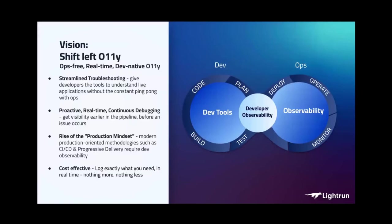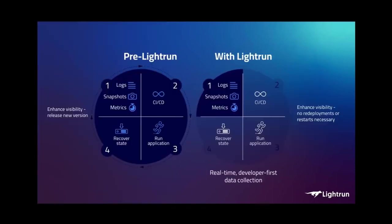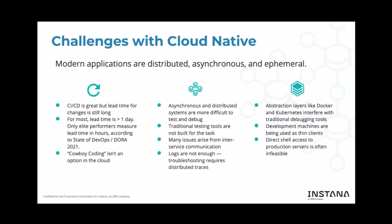This information flow between the developer and the production system should happen continuously — it will streamline troubleshooting. We should give developers tools to ask questions and get answers immediately. It should be proactive. Developers are now expected — and actually required — to understand what's going on inside production applications.